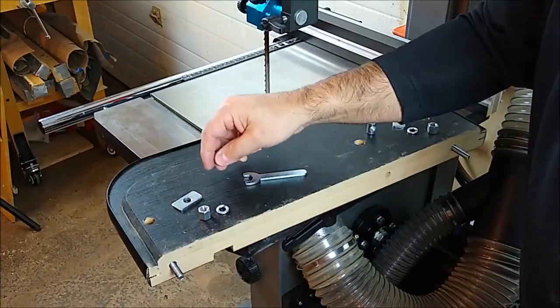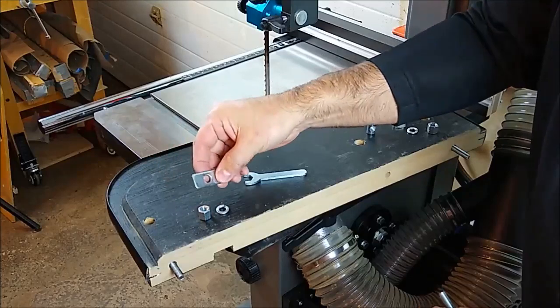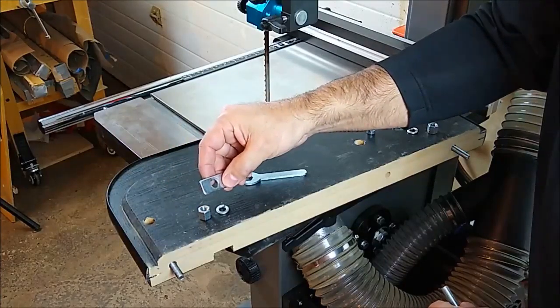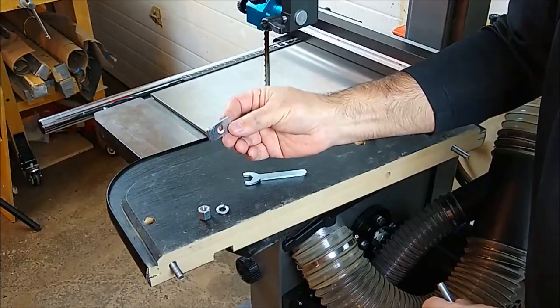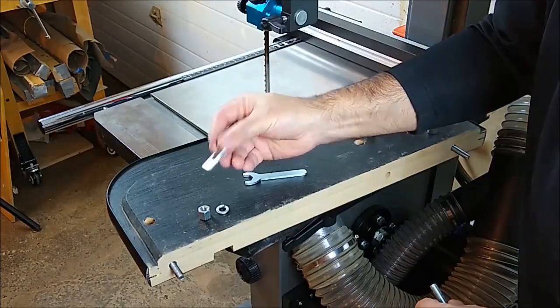Nuts, lock washer, and then a plate style washer which is really important to mount to the saw. This will go on the other side of the cast iron for a nice sturdy connection.